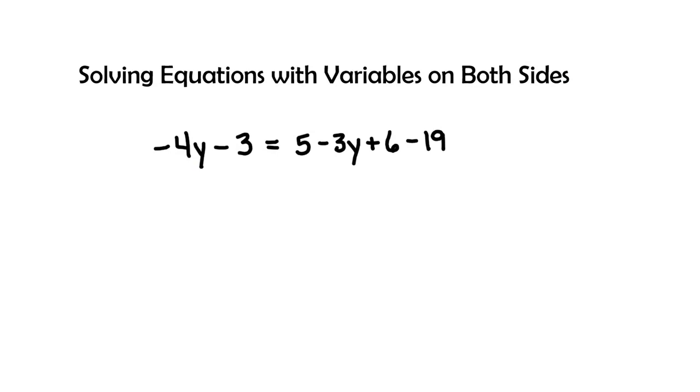Hey guys, we're back and we're going to be solving equations with variables on both sides. Now the equation that we have in front of us is negative 4y minus 3 equals 5 minus 3y plus 6 minus 19.